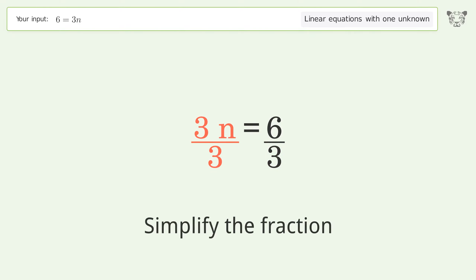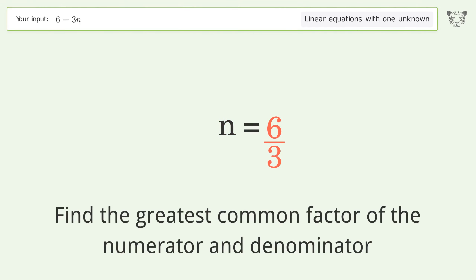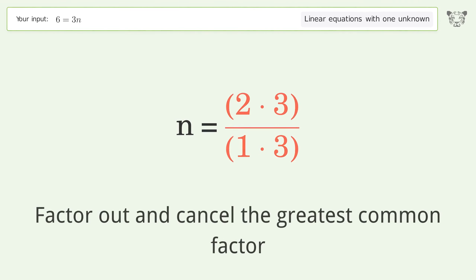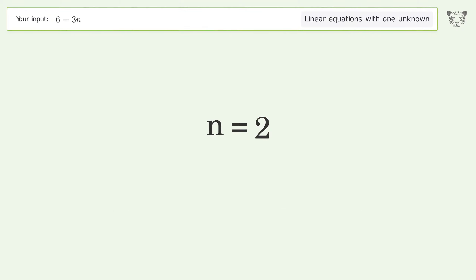Simplify the fraction by finding the greatest common factor of the numerator and denominator. Factor out and cancel the greatest common factor. And so the final result is n equals 2.